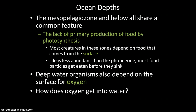The mesopelagic zone and everything underneath shares a common feature: they do not have food formed from primary production by photosynthesis because there is not enough light for that to occur. All of the creatures in this zone rely on food that comes from the surface. Because there is not as much food down here, fewer animals can live here.